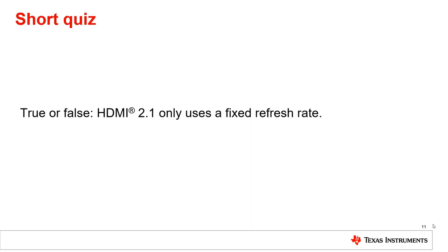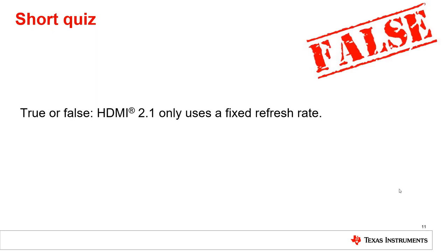True or false: HDMI 2.1 only uses a fixed refresh rate. False. HDMI 2.1 improves upon previous HDMI versions by providing a Variable Refresh Rate capability.